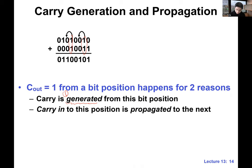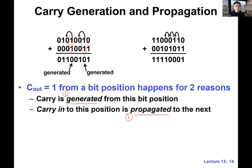The other scenario is the carry is propagated from the previous column, from the previous bit position. Let me ask you — is this column generated? Yes. How about the next column? One plus zero — no, we don't generate the carry here. But is there a carry out? Yes. That's where we say this carry is propagated. When we have one of these operands as a one, we have a propagate. If both of them are ones, we have a generate.